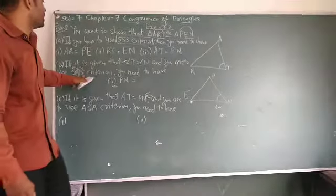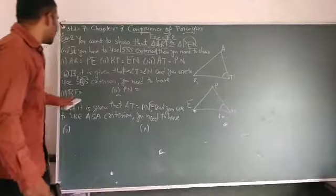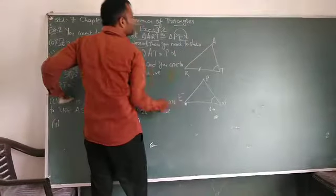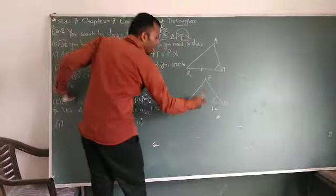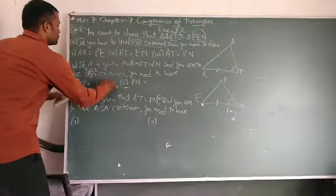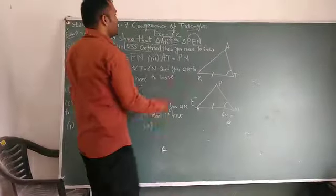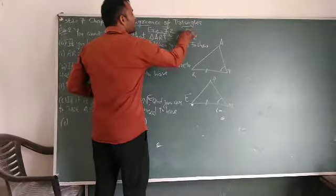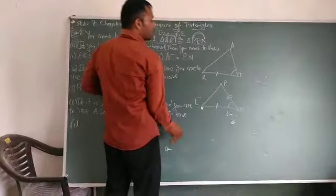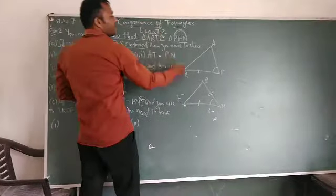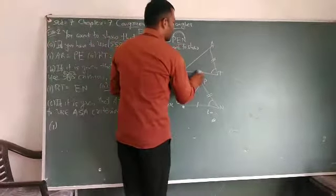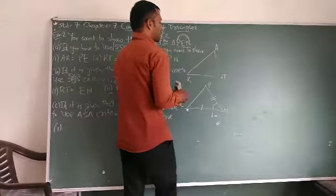You need to have, first, RT is equal to EN. And PN, first and last letter, PN are equal to first and last letter AT. This is your second criterion.